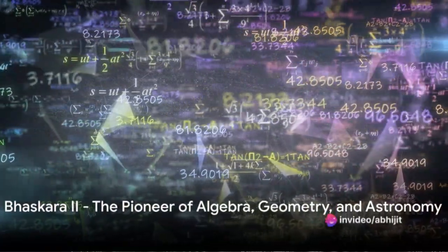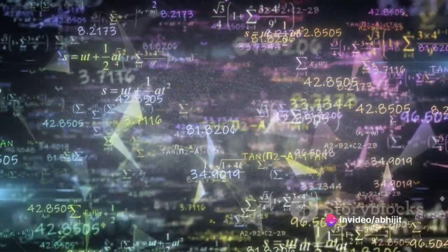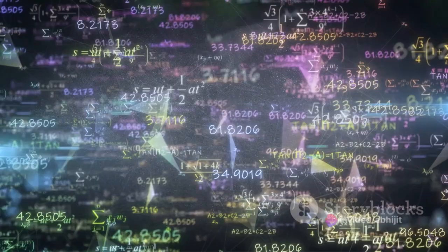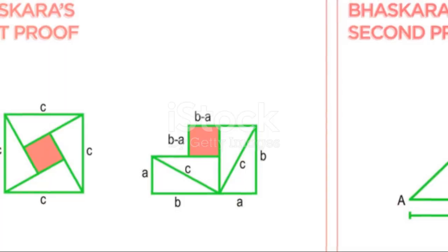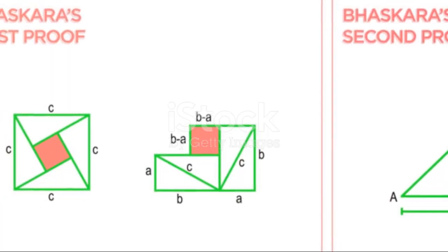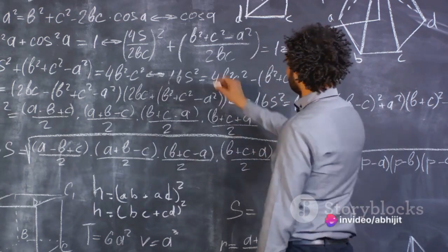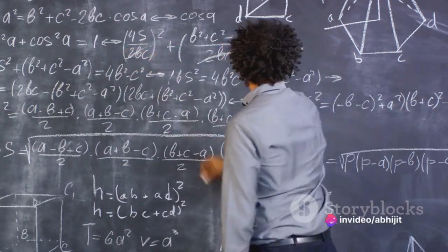Bhaskara 2, also known as Bhaskaracharya, another bright mind from the 12th century, is famous for his work Siddhanta Shiromani. It is a major work on algebra, geometry, and astronomy. His work on calculus predates Newton and Leibniz by over half a millennium.